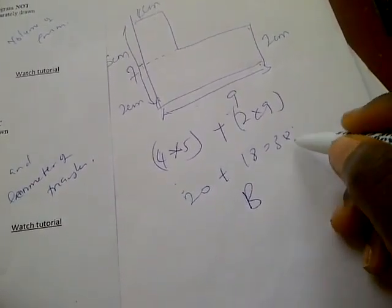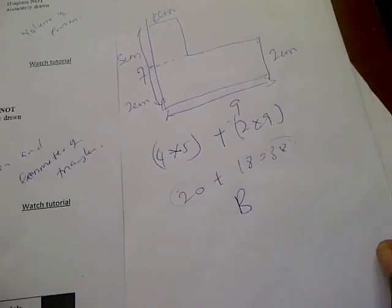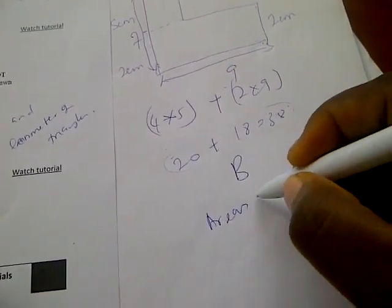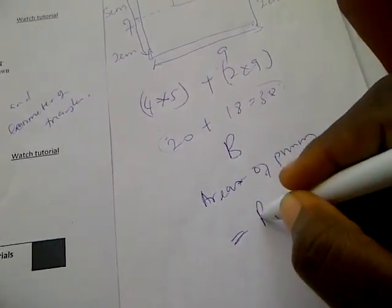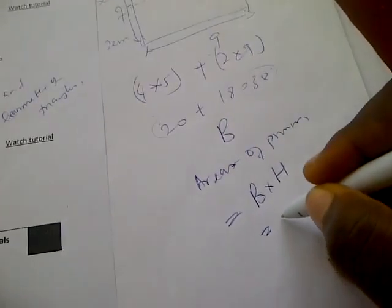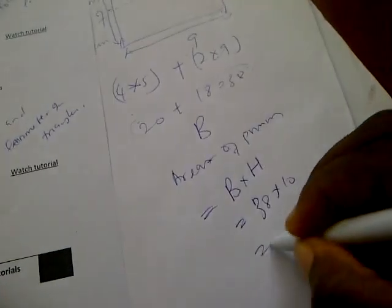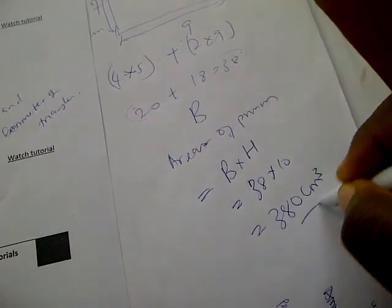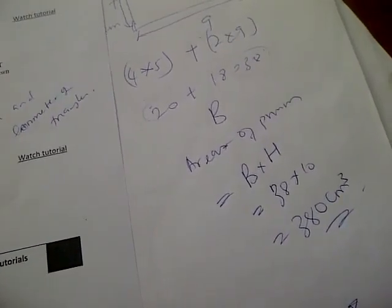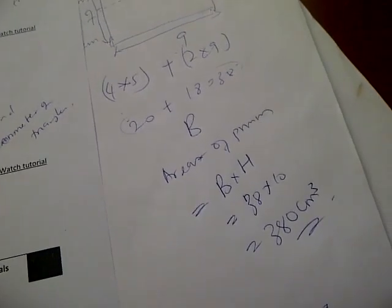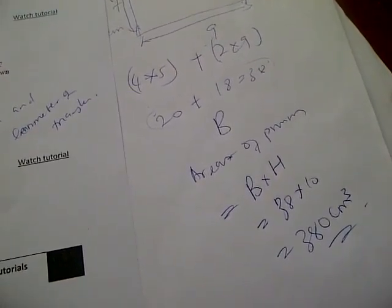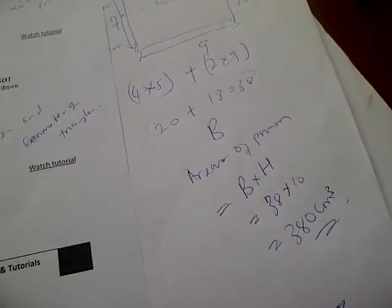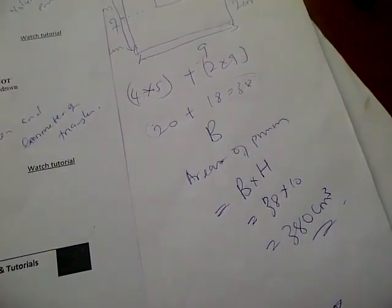So B, the base area, is 38 square centimeters. The volume of the prism is B times the height of the prism: 38 times 10, which gives 380 centimeters cubed. That's how you handle the volume of a prism — no matter the type, find the base area and multiply by the height of the prism.